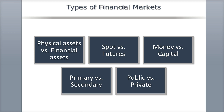Physical markets, also known as tangible or real asset markets, deal with products like automobiles, corn, computers, and machinery. Financial asset markets, on the other hand, deal with stocks, bonds, and mortgages. Financial markets also deal with derivatives, whose value is derived from another asset, such as options.